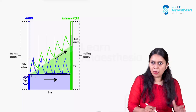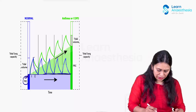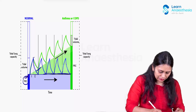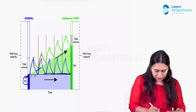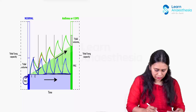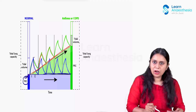In the asthma or COPD patient, due to airway narrowing and incomplete exhalation, inspiration happens but expiration does not complete. The second breath starts again with incomplete exhalation, then the third breath starts again with incomplete exhalation. This causes progressive accumulation of air.